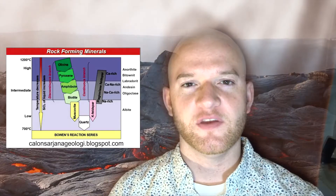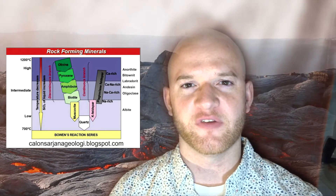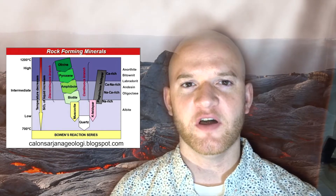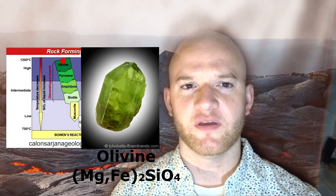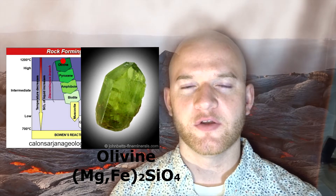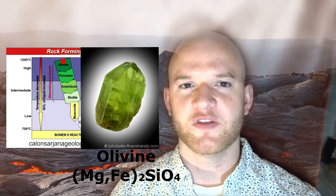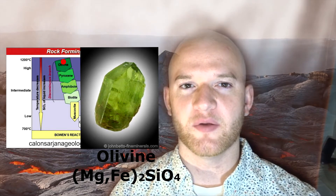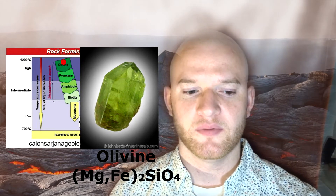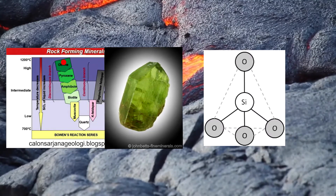The discontinuous path has more moving parts. The first species to crystallize out is olivine, at around 1300°C. It could stop here — if you were to quench this magma, olivine would be the predominant mineral. But we can go further.